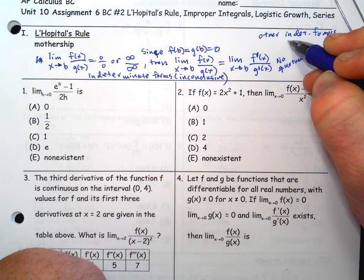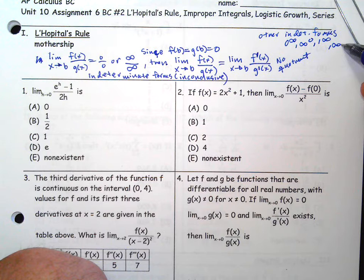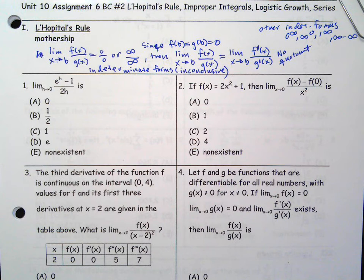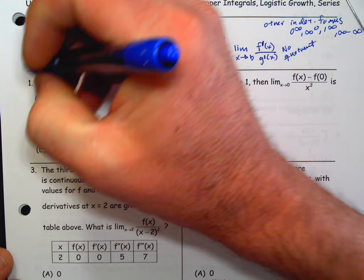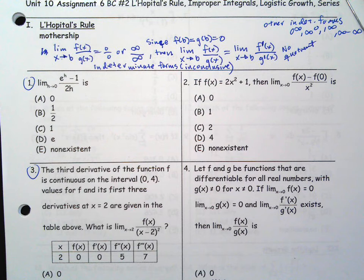There are some other indeterminate forms: 0 to the infinity, infinity to 0, 1 to the infinity, infinity minus infinity, or some of them. You're probably not going to see any like that on the AP test — probably 0 over 0 or infinity over infinity — but I think we'll throw one in here for practice. So what I want you to do is try problems 1, 3, and 5 on this front page. Go ahead, pause the video, try them, then unpause it and I'll go over them.